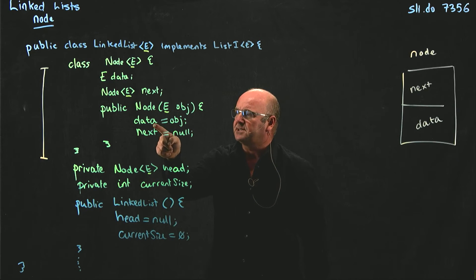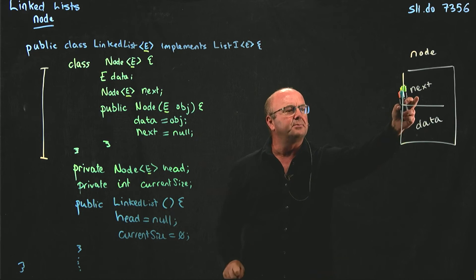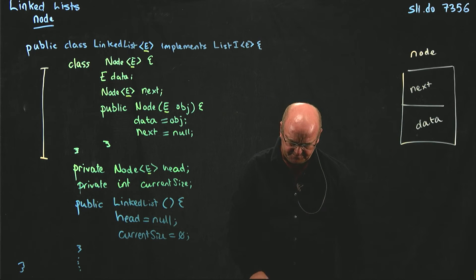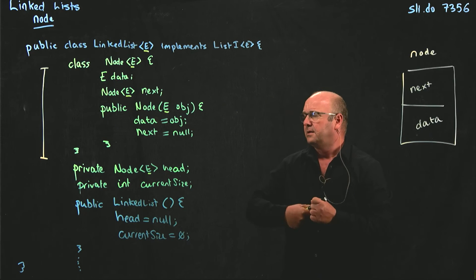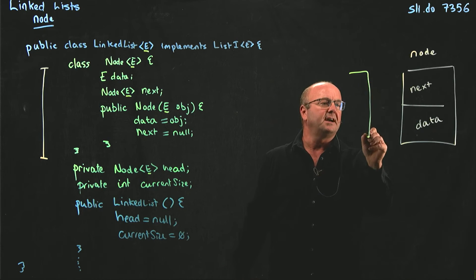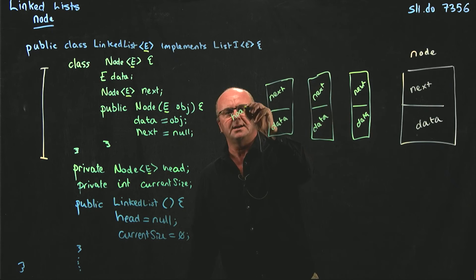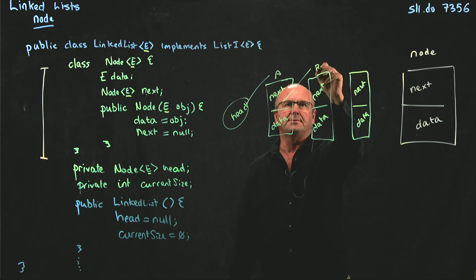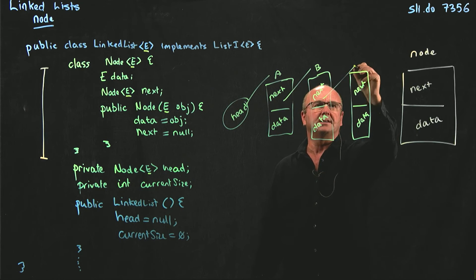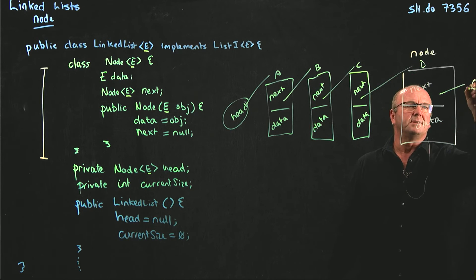So data holds our E. Here's our data in our node. And next holds a pointer to another node. Let me just briefly talk about this currentSize pointer here. Let's assume I have a list. Here's a list with next and data. And here's head. So head points to A, A.next points to B, B.next points to C, C.next points to D, and D.next points to null.